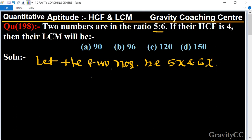And HCF is given, HCF is 4, so here we write HCF equal to 4. And the HCF of 5x and 6x is x, so x equal to 4. Therefore, LCM of 5x and 6x is x into 5 into 6.